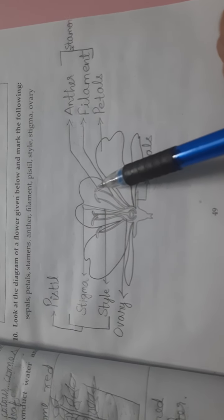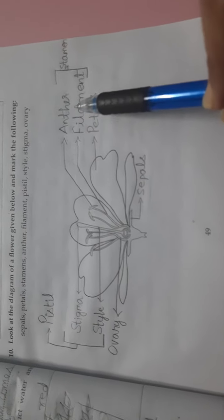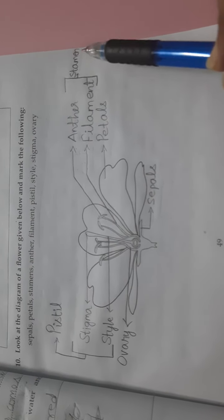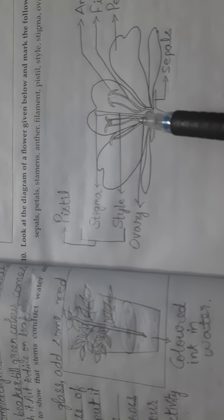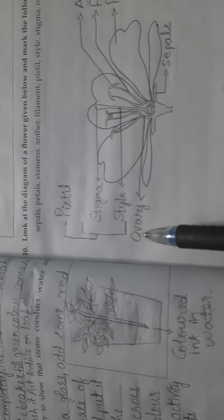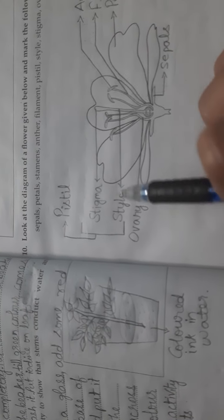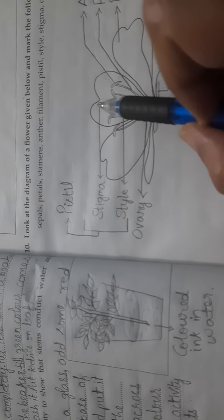Here is the filament and on top of the filament is the anther. The anther and filament together form the stamen. This bulged part over here is the ovary. The long tube is the style and on top of the style is the stigma, and they together form the pistil.